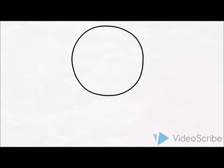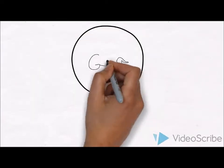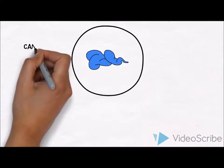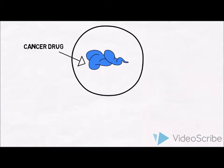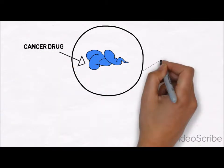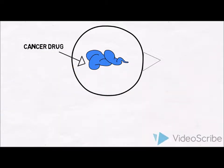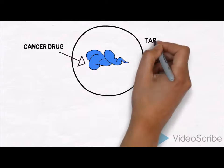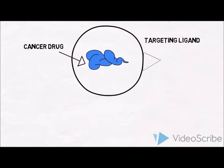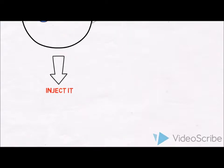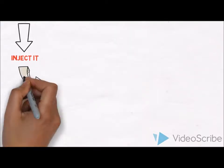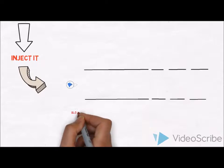So how are these nanoparticles going to work? We're going to take our nanoparticle and fill it with our cancer drug. Then we're going to attach a targeting ligand to the surface of the nanoparticle — I'll explain how these work in just a bit. Once we do this, the nanoparticle is injected right into the bloodstream. Here's what it looks like.